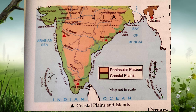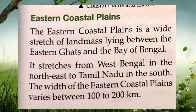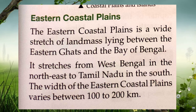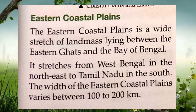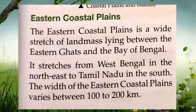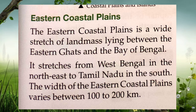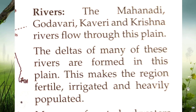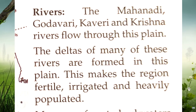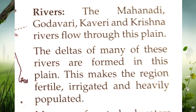First, we are going to discuss about the Eastern coastal plains. It is a wide stretch of land lying between the Eastern Ghats and the Bay of Bengal. It stretches from West Bengal to Tamil Nadu. The width of Eastern coastal plains varies between 100 to 200 kilometers. Mahanadi, Godavari, Kaveri and Krishna are the rivers flowing through this plain. The Eastern coastal plains are very fertile, irrigated and heavily populated.